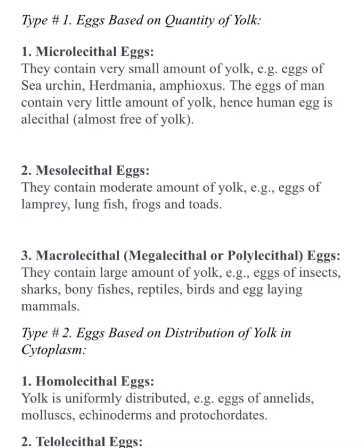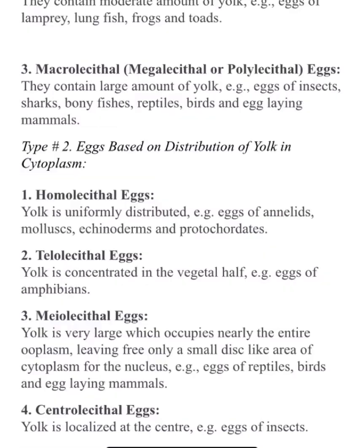Now we will study about the classification of eggs. I have given an example for each classification with about two to three lines for each type. Egg classification is basically of two types: one based on yolk, and the other based on the distribution of yolk in the cytoplasm. Go through both types and also go through the examples — they are very important.